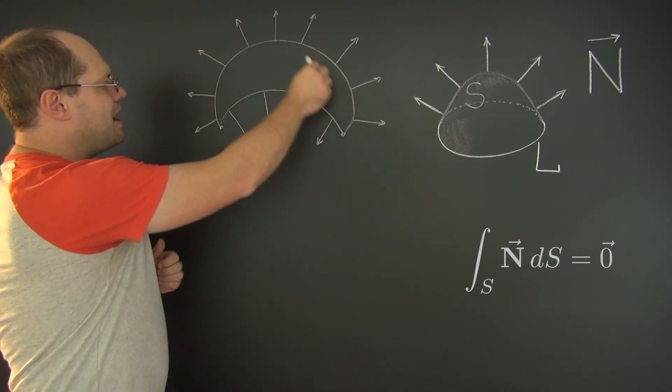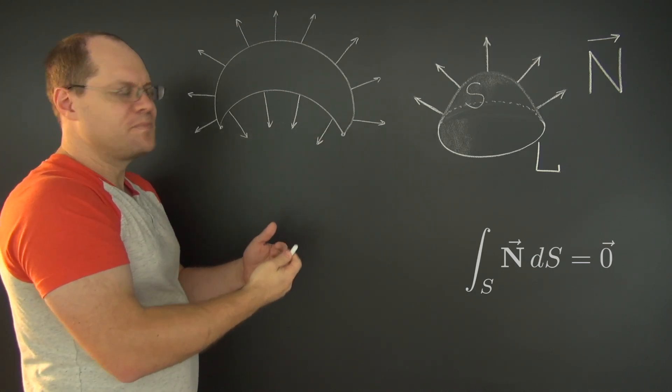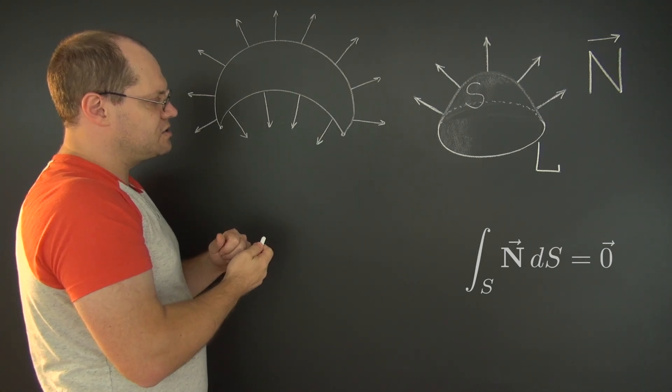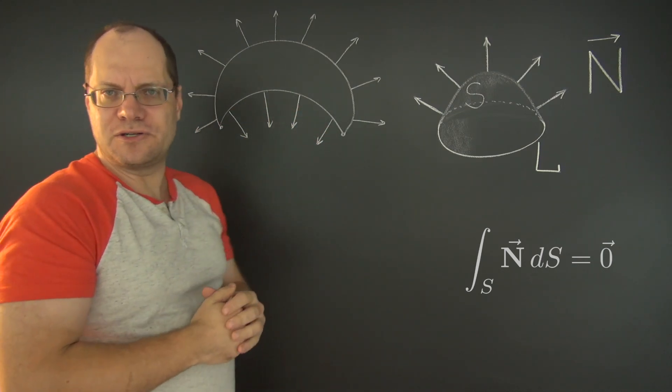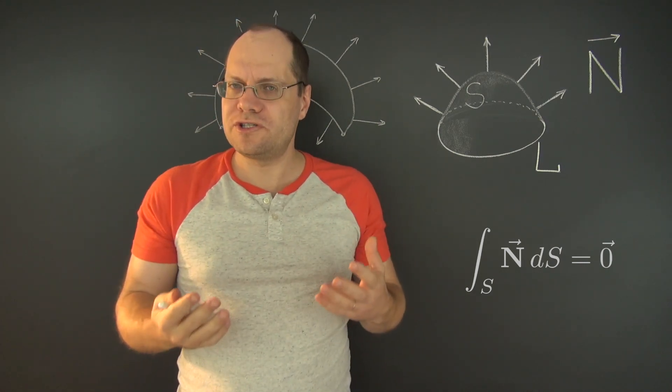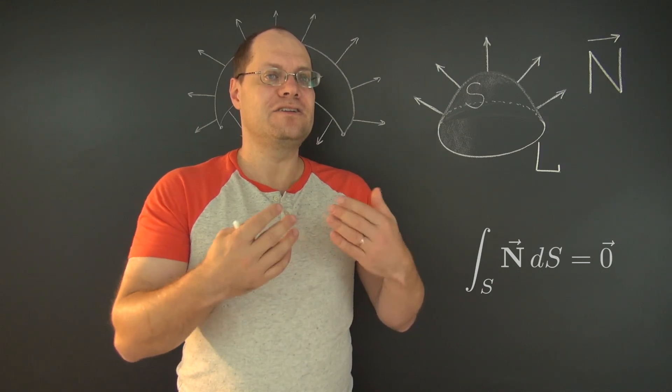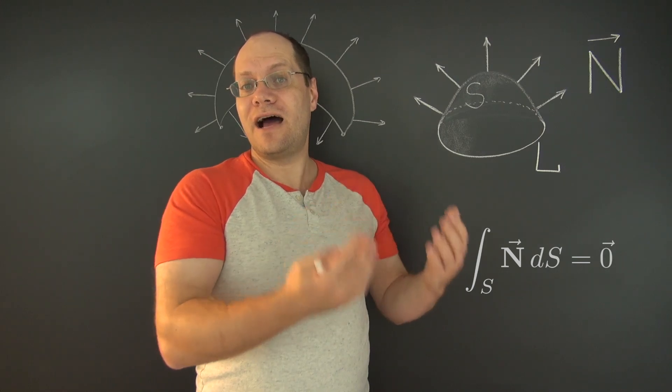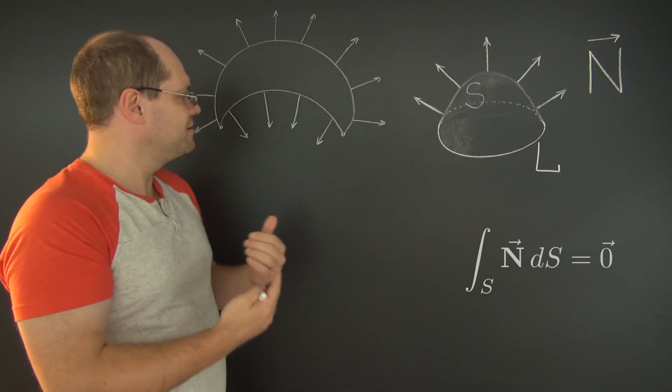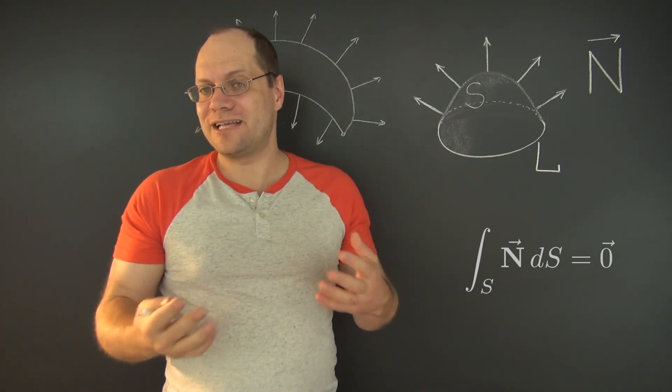and that is the statement that the integral of the normal over closed surface vanishes was made only for smooth surfaces. And the combined surface here, even though each individual surface is smooth, the combined surface is not smooth because there's an obvious kink all along the boundary. So in order to use this argument, we would have to extend the statement that the integral of the normal over closed surface is zero to surfaces that are not smooth, that are at the very least piecewise smooth. And that would require some analysis.